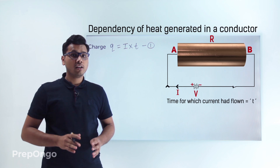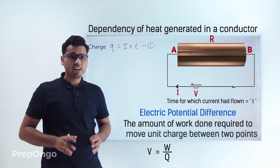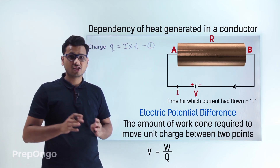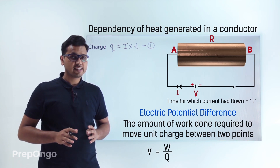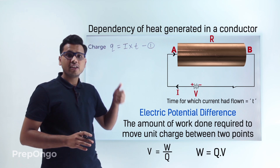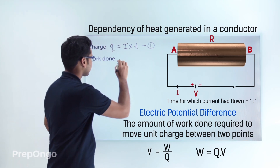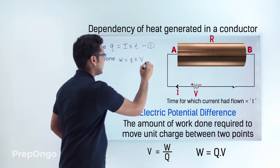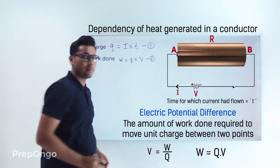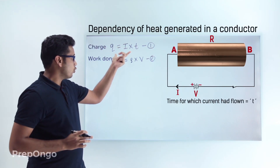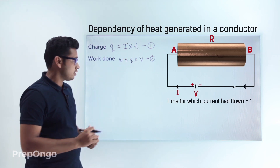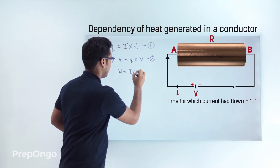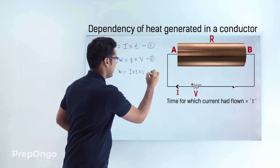We have also studied the definition of potential difference, which says it is the amount of work done required to move charge Q from point A to point B. So we can say the work done W = Q × V. Substituting Q = I × t from equation 1 gives us W = I × t × V. Let's call this equation number 3.